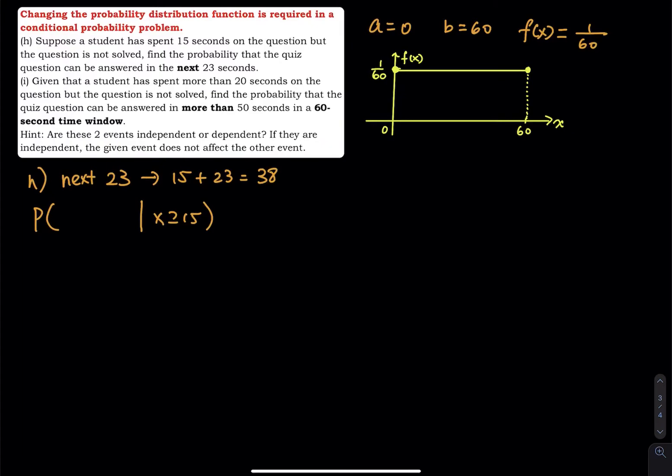So the picture is like that. So at this point is 15, right? So next 23, so that means you go ahead, you add 23 to it, you stop at 38.